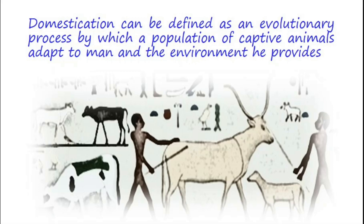Domestication occurs over many generations, through a combination of genetic changes and environmental experiences recurring each generation.